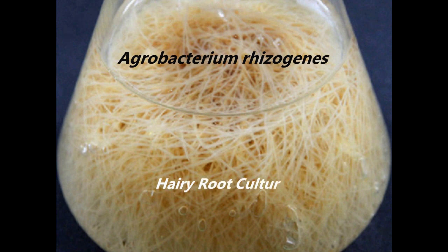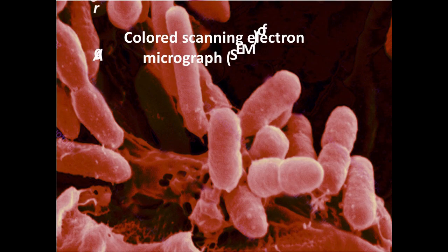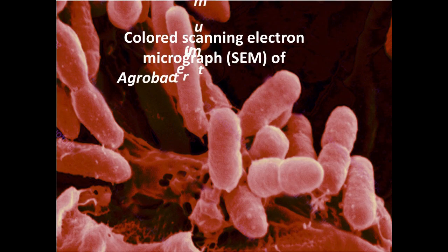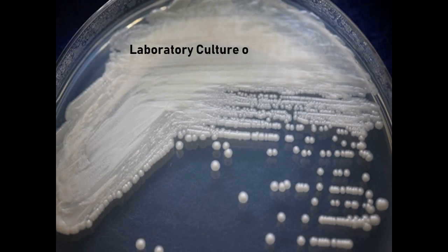This slide shows hairy roots in a laboratory culture. Look at the morphological appearance of agrobacterium tumefaciens cells under scanning electron microscopy. Here you can see how an agrobacterial colony really looks like — colony morphology in laboratory culture grown on LB agar media.